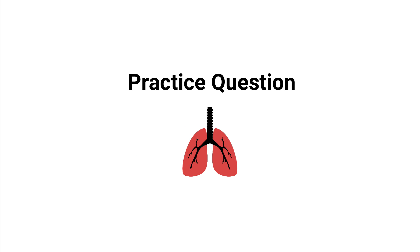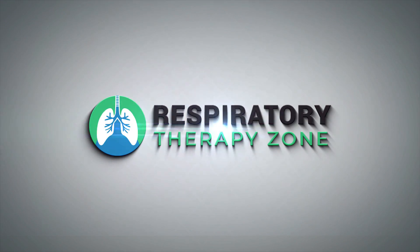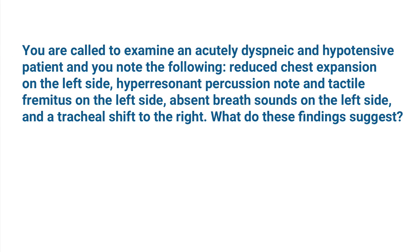In this video we're going to break down a practice question about evaluating the signs of a pneumothorax. You are called to examine an acutely hypotensive patient with dyspnea, and you note the following: reduced chest expansion on the left side, a hyper-resonant percussion note, and tactile fremitus on the left side, and absent breath sounds on the left side and a tracheal shift to the right.